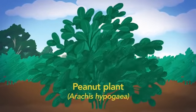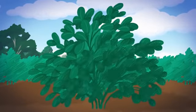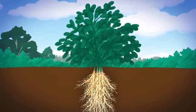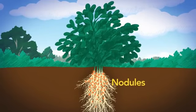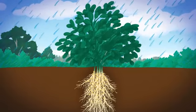Most legumes, pod-producing plants including peas and beans, have a special relationship with rhizobia bacteria. These plants have root organs called nodules, where bacteria live inside specialized plant cells.